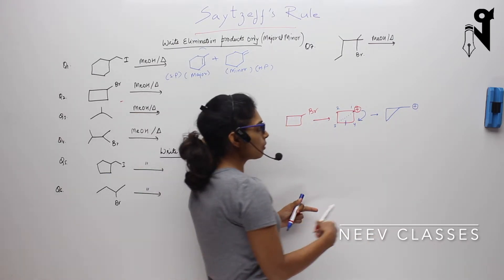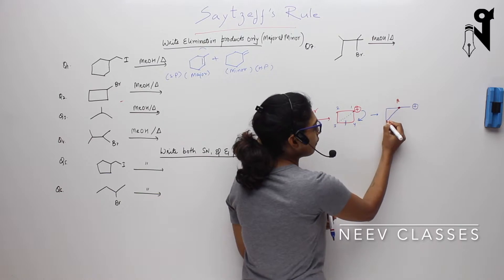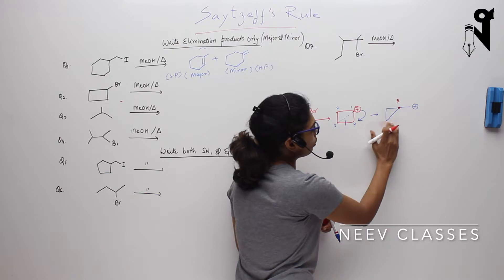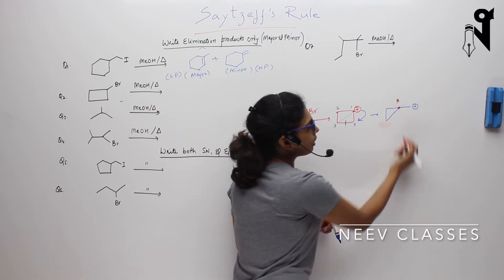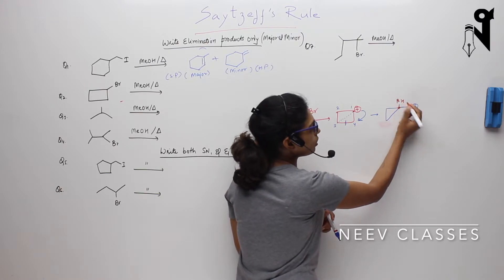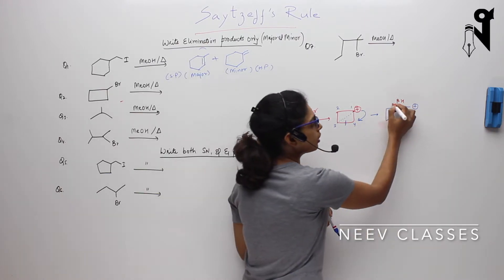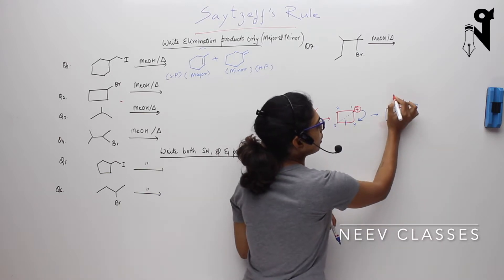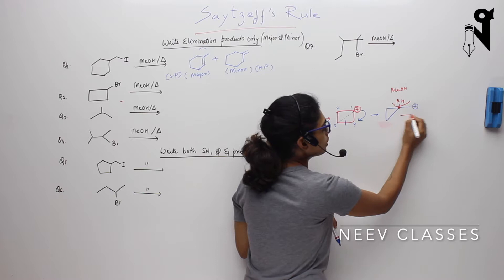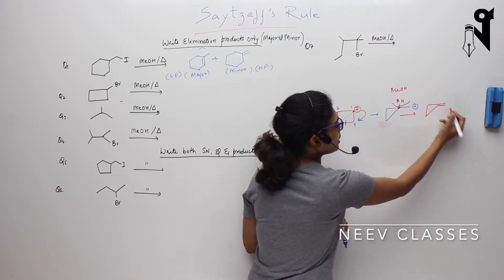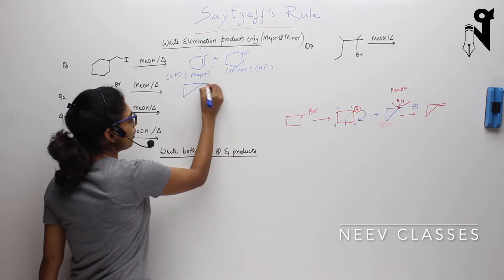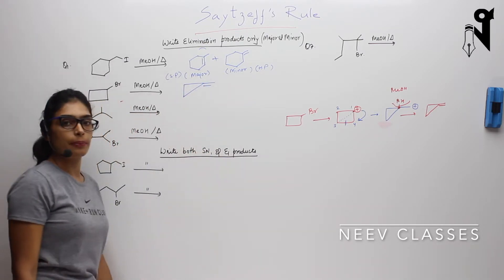Now, what are all the beta-hydrogens? I have only one beta-carbon. So removal of hydrogen will take place from this position. The base MeOH will pull out this hydrogen and will form this compound. So there is only one single product here, and this is the product.